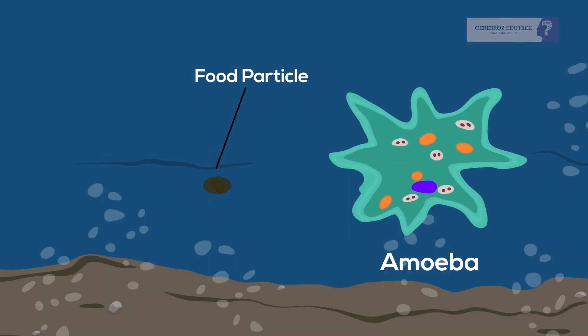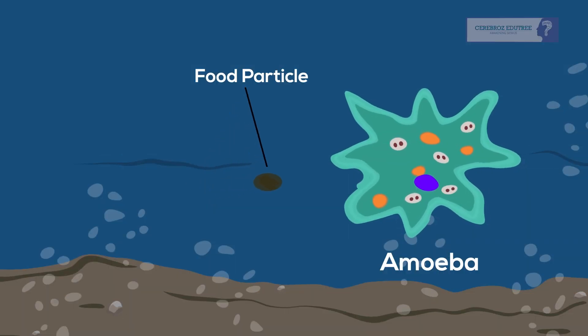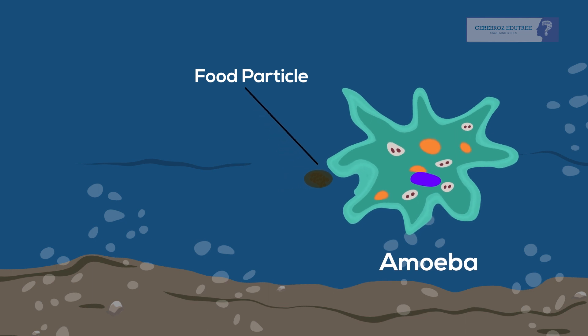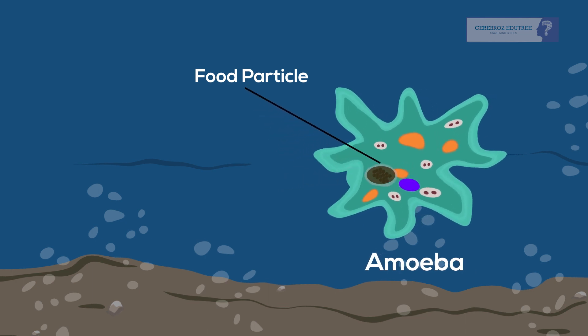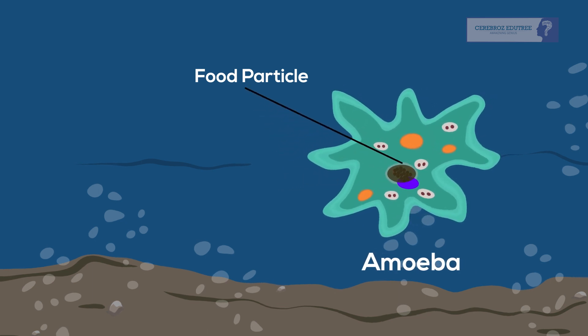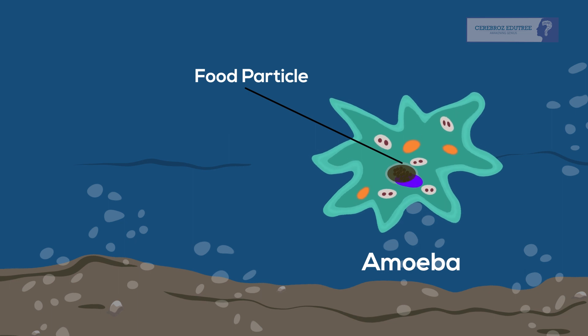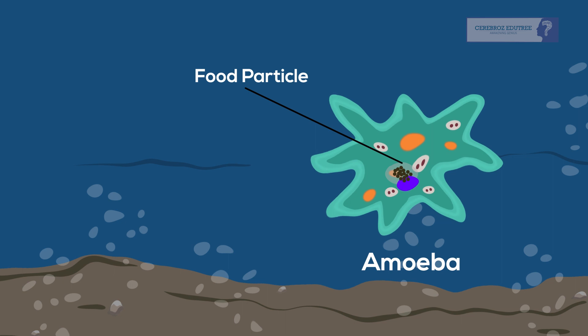Amoeba also uses pseudopodia to capture food. For example, when it senses the food, it pushes out pseudopodia surrounding the food particle and engulfs it. The food becomes trapped in a food vacuole.